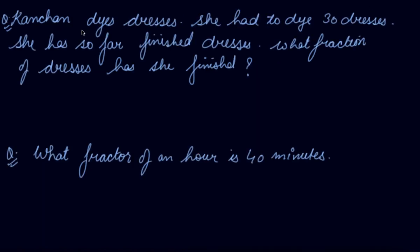The question is: She had to dye 30 dresses. She has so far finished 20 dresses. What fraction of dresses has she finished? The total parts are 30. She has to make 30 dresses, so the total number is 30. This is the denominator.